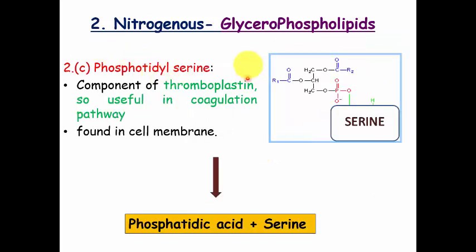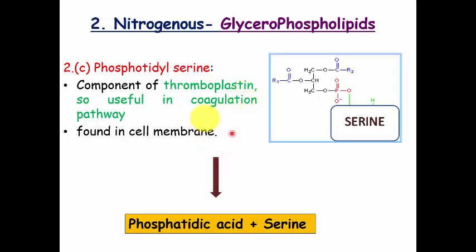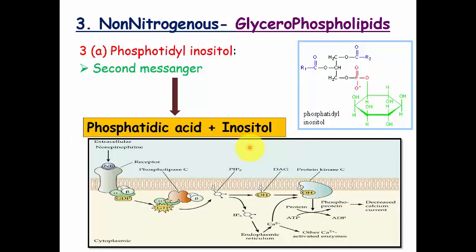The third nitrogenous glycerophospholipid is phosphatidylserine. Same as phosphatidylcholine and phosphatidylethanolamine, but with serine in place of choline or ethanolamine. Phosphatidic acid plus serine forms phosphatidylserine. It is the most important component of thromboplastin, which is one of the factors in the coagulation pathway. It is also found in cell membranes.